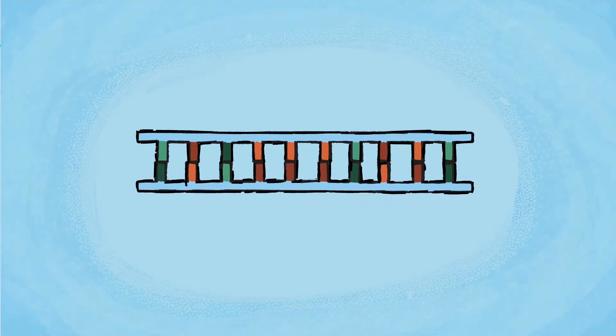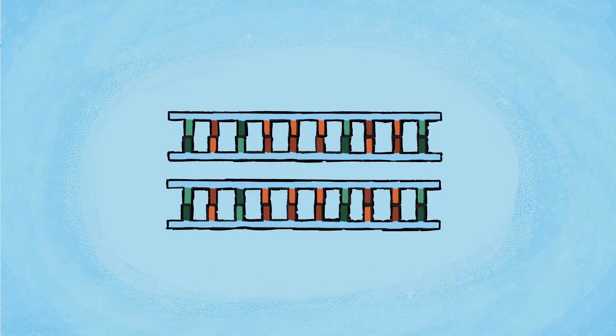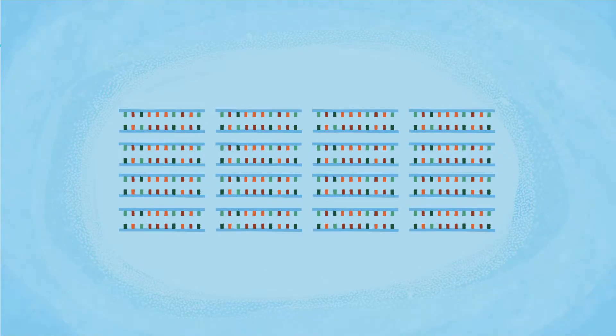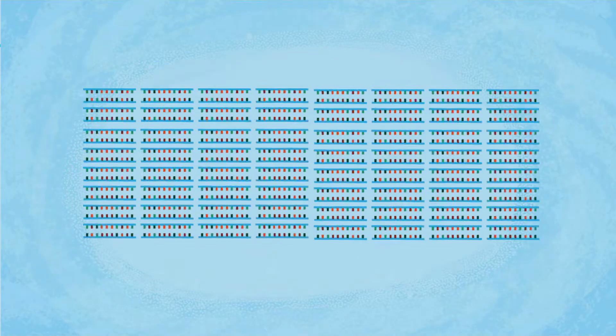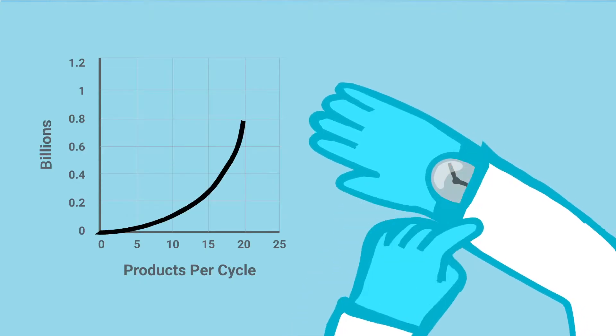Each PCR cycle doubles the amount of target sequence, or amplicon, in the reaction. As the number of cycles increases, theoretically the number of DNA molecules increases exponentially, so that after 30 cycles, more than 1 billion DNA molecules will have been generated in a few hours.